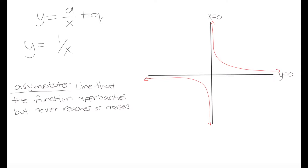The horizontal asymptote is the line that our function approaches but never touches or crosses. So for y = 1/x, y = 0 is our horizontal asymptote and x = 0 is our vertical asymptote. It's very important to understand this basic graph because all hyperbolas we encounter are going to be variations of this, looking very similar but with slight differences depending on the values of a and q.